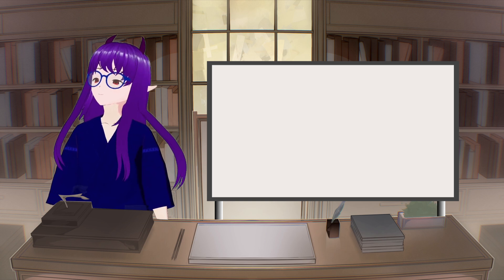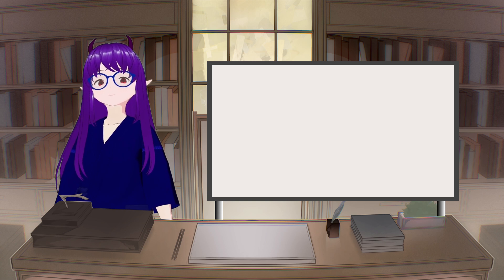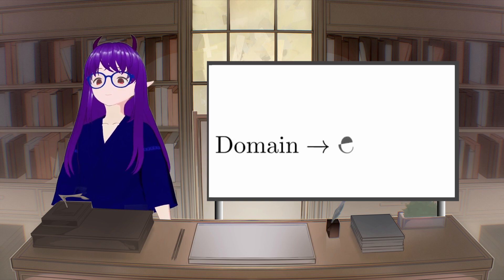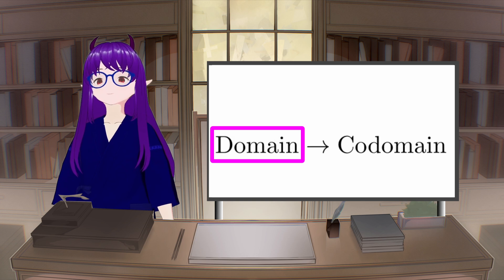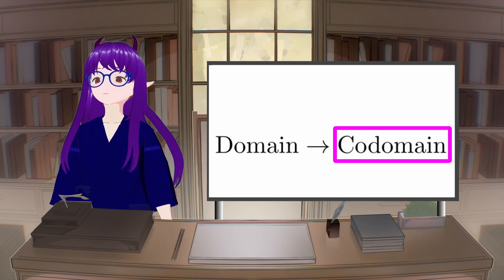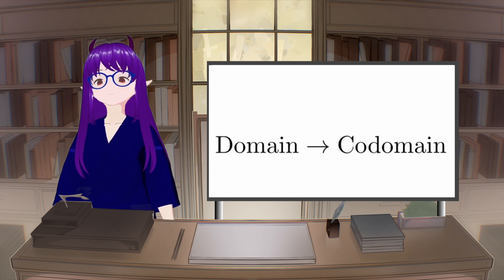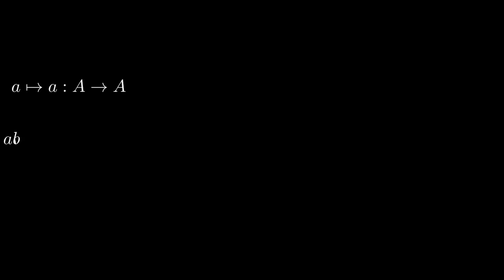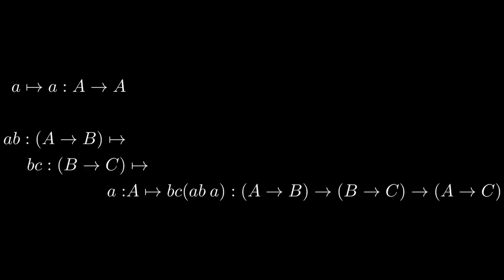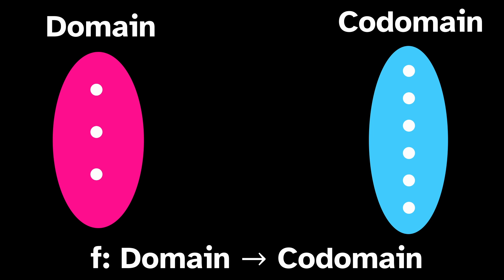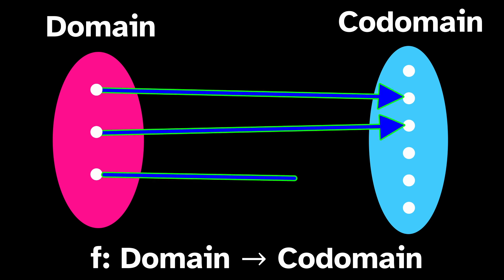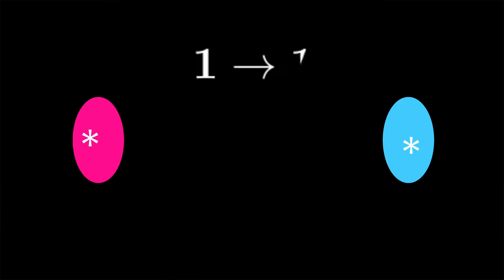We introduced typing to fix problems with lambda expressions, so let's create a type for functions. In type theory, functions also have a type, expressed as domain → codomain: the type of the thing the function takes as an argument, a little arrow, and then the thing the function will return. One of the most fundamental rules of type theory is that these functions must be total — for every element inhabiting the domain, the function has to be able to produce some element that inhabits the codomain.